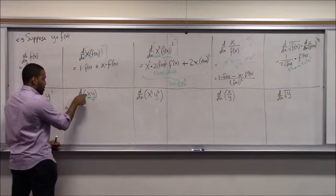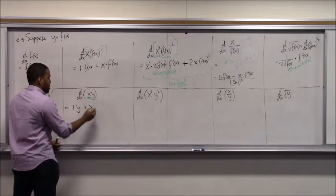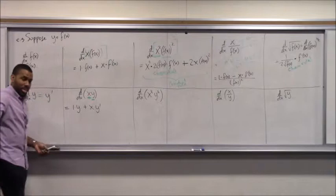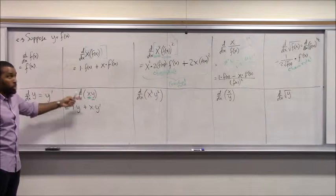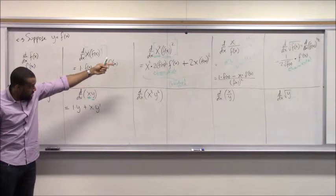Using the product rule on x times y: derivative of x is 1, times y, plus x times y prime. Everywhere you see f prime there should be y prime replacing it. Everywhere you see f there should be a y.